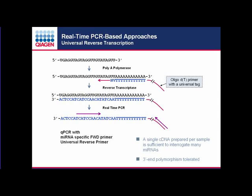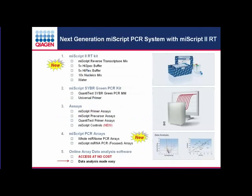Polyadenylation and reverse transcription steps can be combined into a one-step reaction using the miScript system. Once cDNA is prepared, it can be used as a template in real-time PCR using a microRNA-specific forward primer and a universal reverse primer. The miScript 2 RT kit has two different 5X RT buffers: a 5X high-spec buffer and a 5X high-flex buffer, used in combination with a 10X nucleic mix.